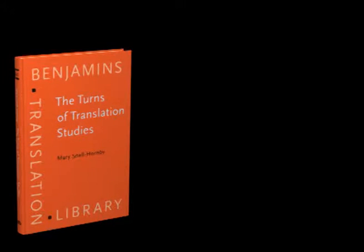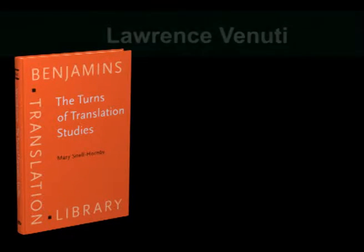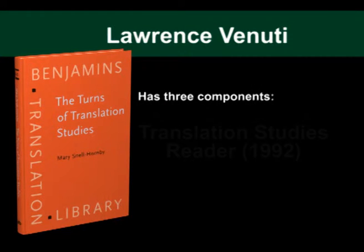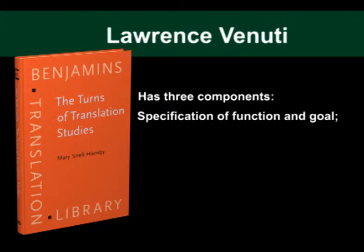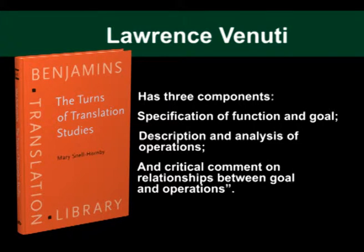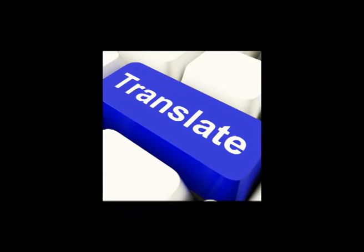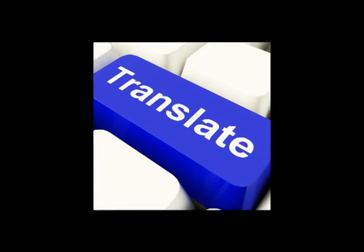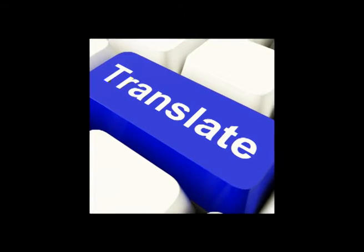Explicating the possibility of a complete theory of translation, Lawrence Venuti in the Translation Studies Reader (1992) quotes Lewis Kelly, who believed that such a theory has three components: specification of function and goal, description and analysis of operations, and critical comment on relationships between goal and operations. Kelly rightly believes that throughout history, theorists have fallen back on one of these components to articulate their theoretical frameworks.